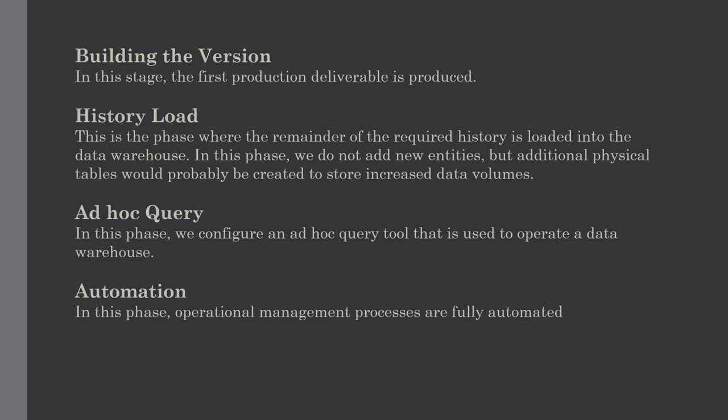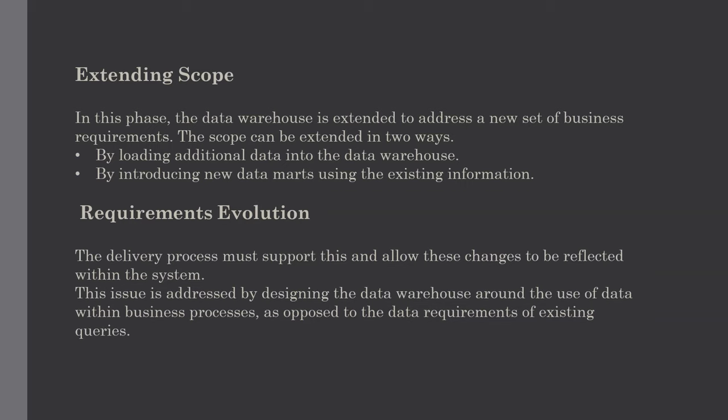The next stage is automation. In this phase the operational management processes are fully automated. This includes transforming data into a form suitable for analysis, monitoring query profiles and determining appropriate aggregations to maintain system performance, extracting and loading data from different source systems, and backing up, restoring, and archiving the data.